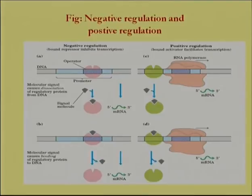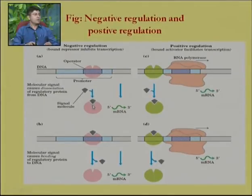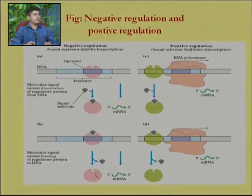In negative regulation, the repressor protein binds to the operator region in absence of a signal molecule. When a signal molecule is present, it binds to the repressor protein and brings a conformational change in the three-dimensional structure, because of which the signal molecule-bound repressor is unable to bind to the operator, so transcription can occur. In another case, the repressor may be active in presence of a signal molecule; in absence of signal molecule, the repressor is inactive and transcription occurs.